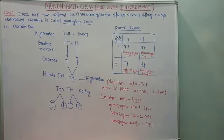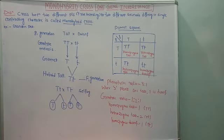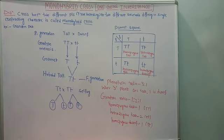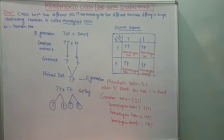Hello students, today we are going to discuss about inheritance of one gene. In the previous video we discussed about the 7 traits or 7 contrasting characters selected by Mendel for his breeding experiment. Now we will see how Mendel carried out the breeding experiment by taking one single contrasting character — the monohybrid cross, also called one gene inheritance.